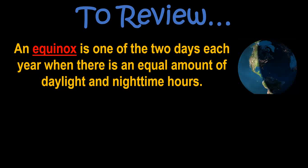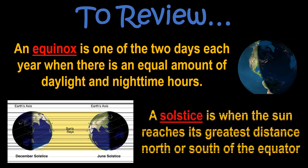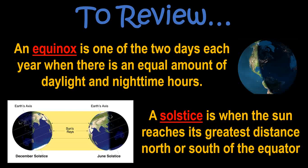So, to review, an equinox is one of the two days each year when there is an equal amount of daylight and nighttime hours. A solstice, on the other hand, is when the sun reaches its greatest distance north or south of the equator.